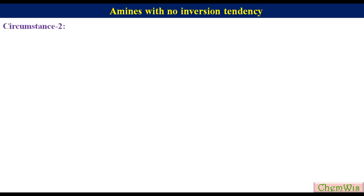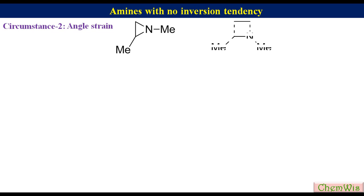Circumstance 2: Angle strain. If the nitrogen is part of a three- or four-membered ring, amine inversion is significantly retarded by angle strain. Under that circumstance, two enantiomers of a chiral amine will be isolable. For example, 1,2-dimethylaziridine — in these compounds the nitrogen behaves as a stereocenter.